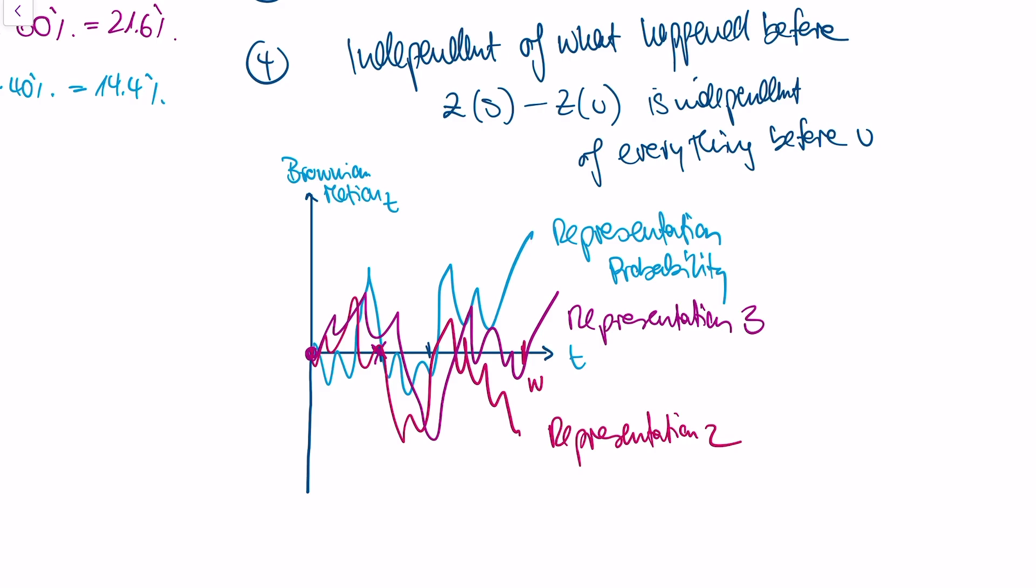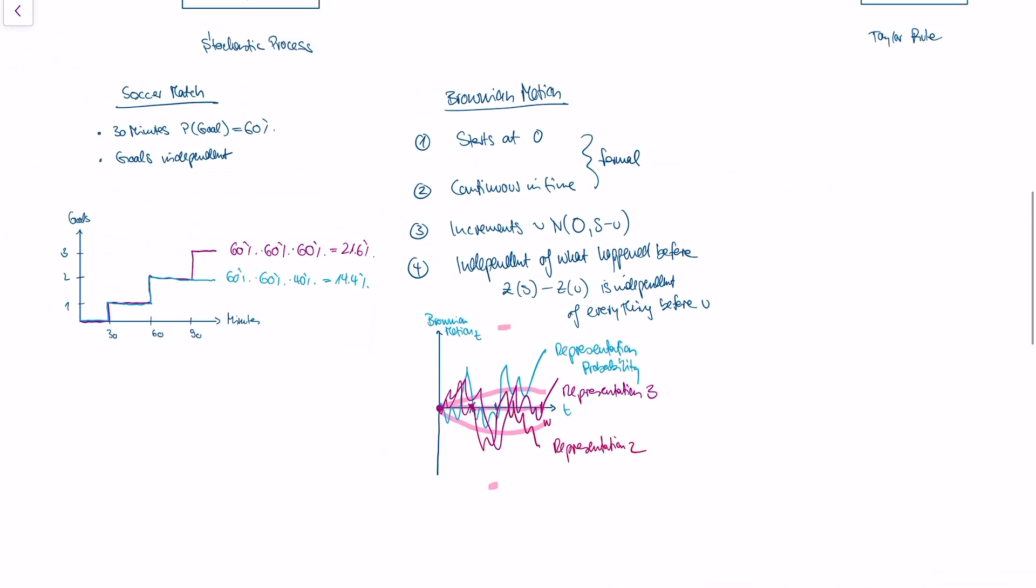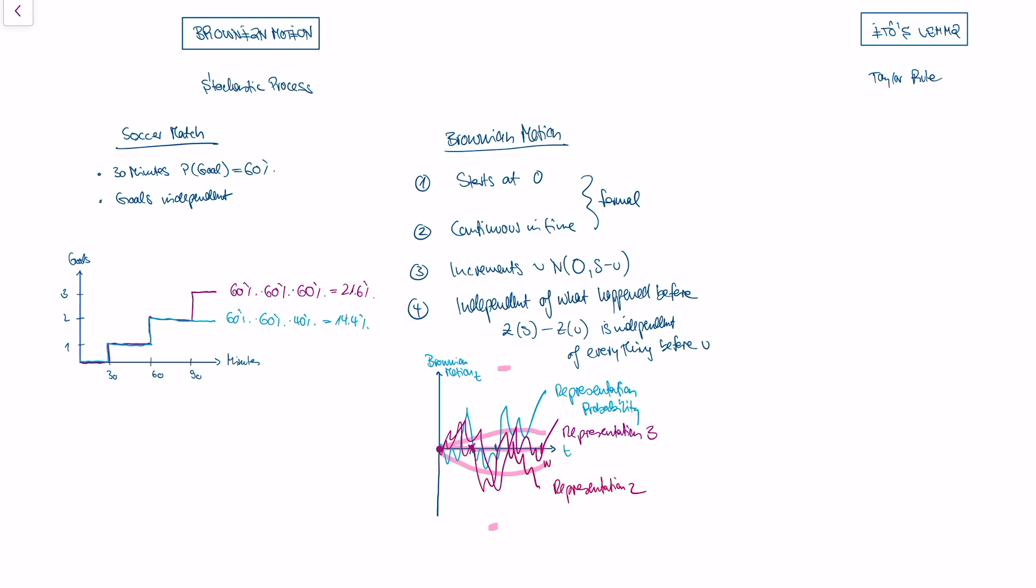With Brownian motion, it's more likely that the variable stays centered around the zero line than that it drifts off very far. This is going to be the central building block. Brownian motion is going to be the stochastic process we use in the Black-Scholes model to model stock prices, but more on that later.